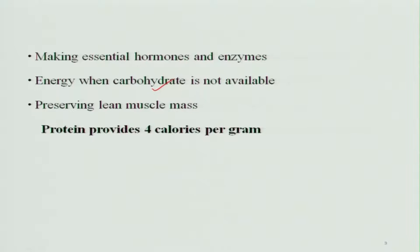Proteins also help in preserving lean body mass — the muscle mass is preserved by proteins. Proteins provide equal energy as carbohydrates: 1 gram of protein provides 4 kilocalories per gram.